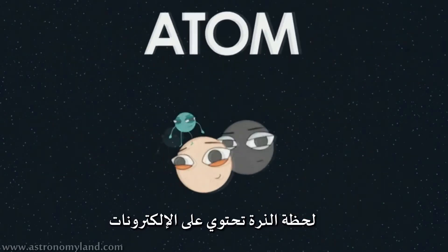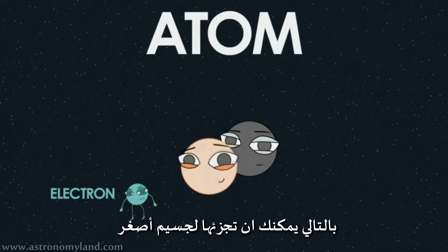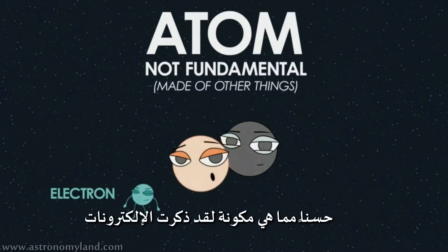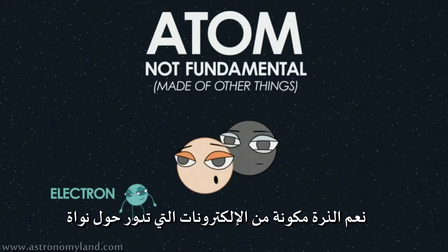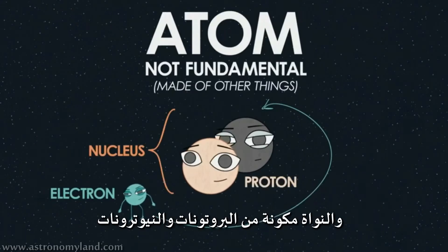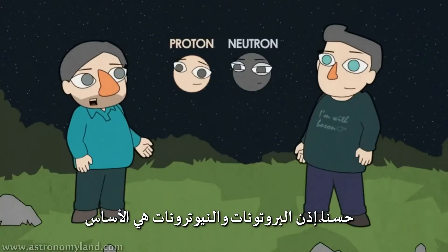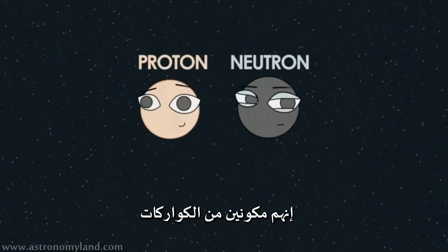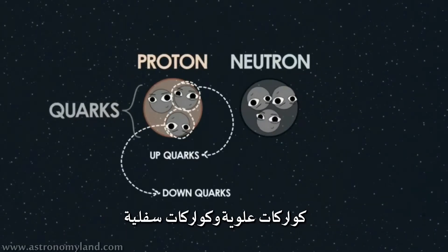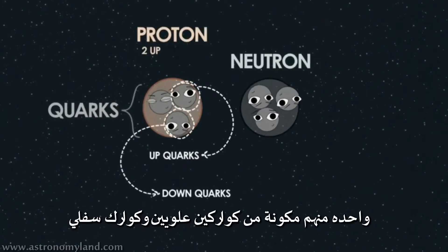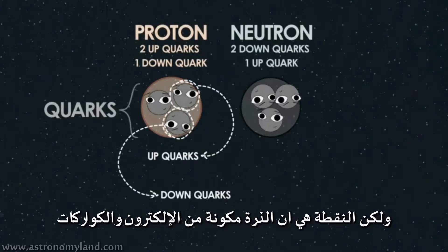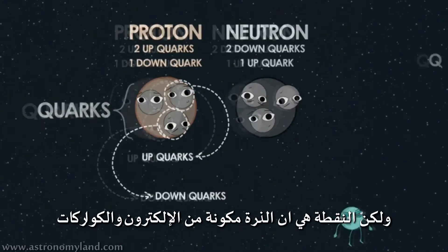Atoms contain electrons, so you can actually cut an atom up into something smaller? Atoms are not fundamental - they're made of other things. So what are they made of? Atoms are made of electrons which go around a nucleus, and the nucleus is made of protons and neutrons. So are protons and neutrons fundamental? No, protons and neutrons are made of quarks - specifically two different kinds: up quarks and down quarks. One of them is two ups and a down, the other is two downs and an up. The point is, atoms are made of electrons and quarks.